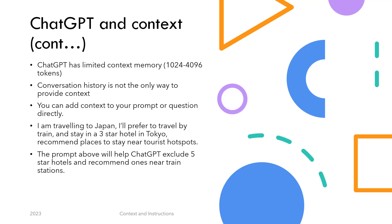Let's say you are traveling to Japan and making travel plans with ChatGPT and want suggestions for hotels to stay. You need to provide context so that it suggests hotels relevant to your plans and budget. A good prompt can be: 'I am traveling to Japan on such and such dates, I prefer to travel by train, and stay in a three-star hotel. Suggest places to stay.' This gives ChatGPT good information to locate and suggest hotels near train stations that fit your budget.